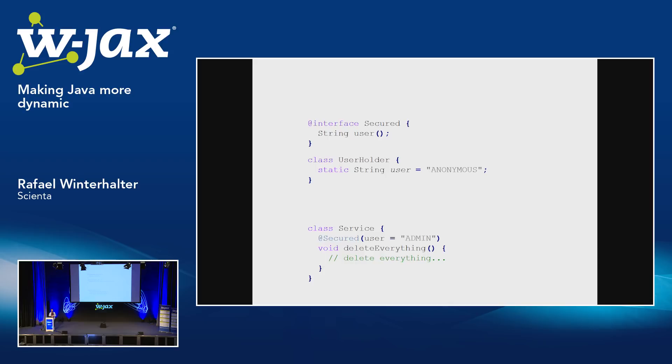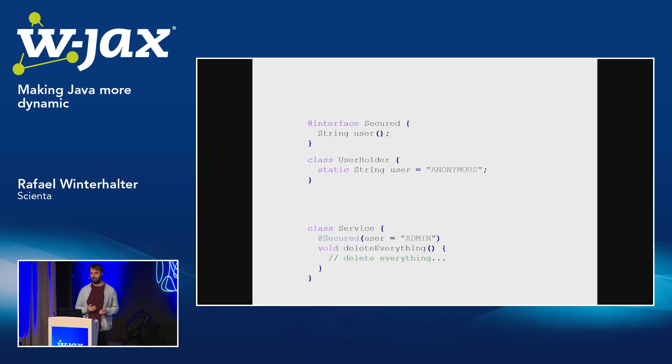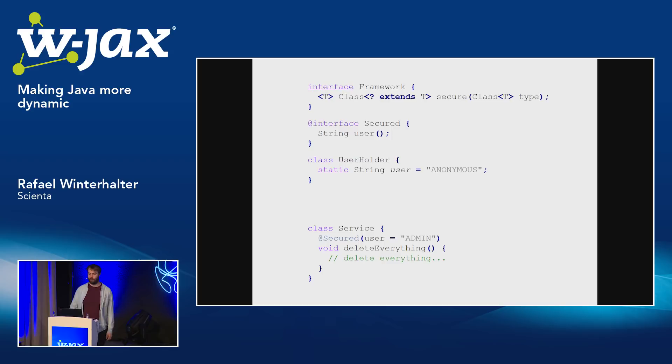But how would you write a framework to do that? Annotations are not processed by the Java Virtual Machine. The JVM actually doesn't care about annotations at all — it doesn't even load the data that represents annotations unless you use them via the reflection API. The core engine of the JVM, the runtime, doesn't care about them at all. So annotating a method by itself doesn't do anything.